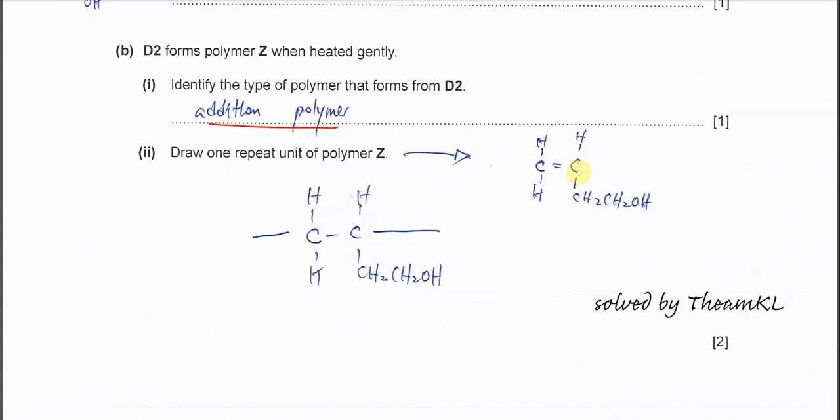Draw one repeat unit of Z. You need to know the structure. D2 actually looks like this, so we focus on the C=C double bond and this is the side chain. When this C=C double bond, the pi bond breaks open up, so it will form tails, and these pi bonds disappear, so you'll form this polymer structure, and this is one repeat unit.